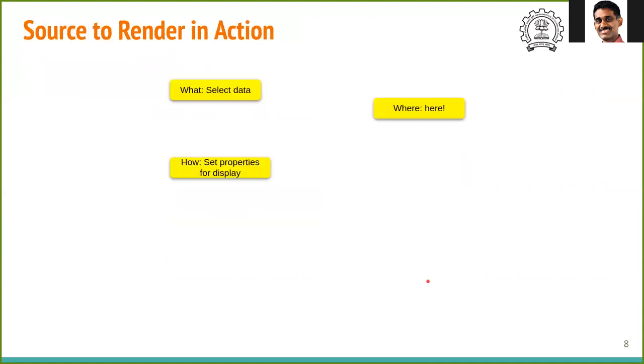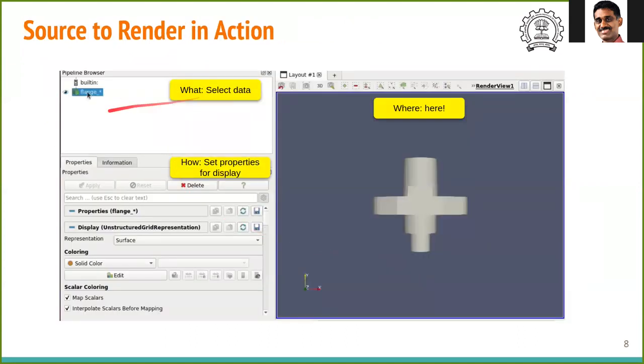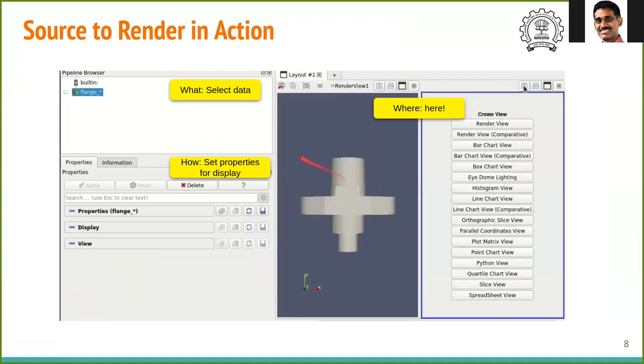Let us see how this is done. We select the source data here which is named flange. It is described by these parameters here and the rendering happens here. This is the default view for any geometry in ParaView.